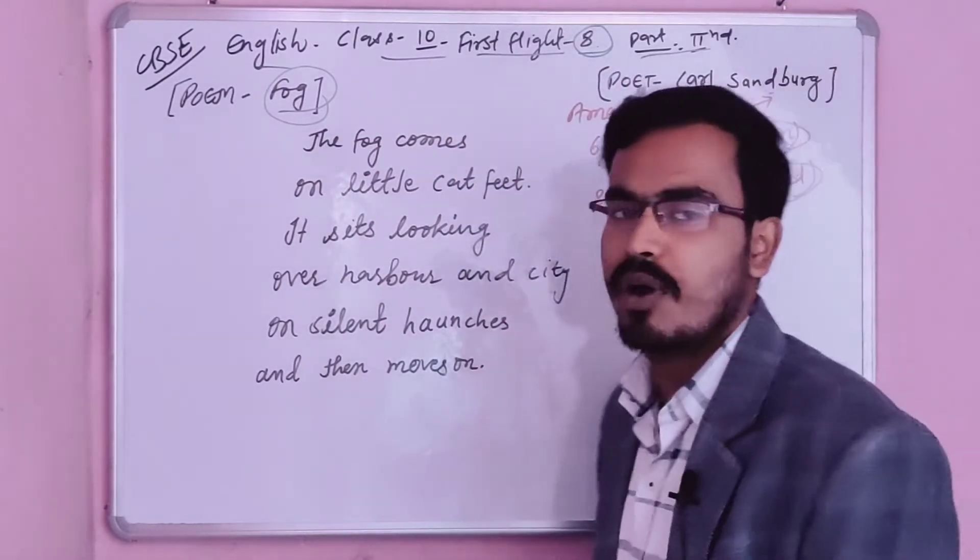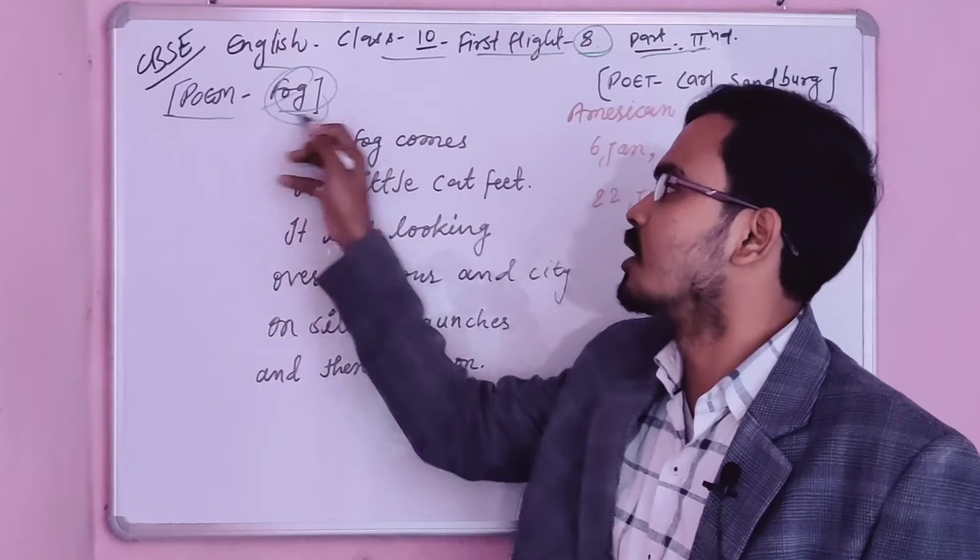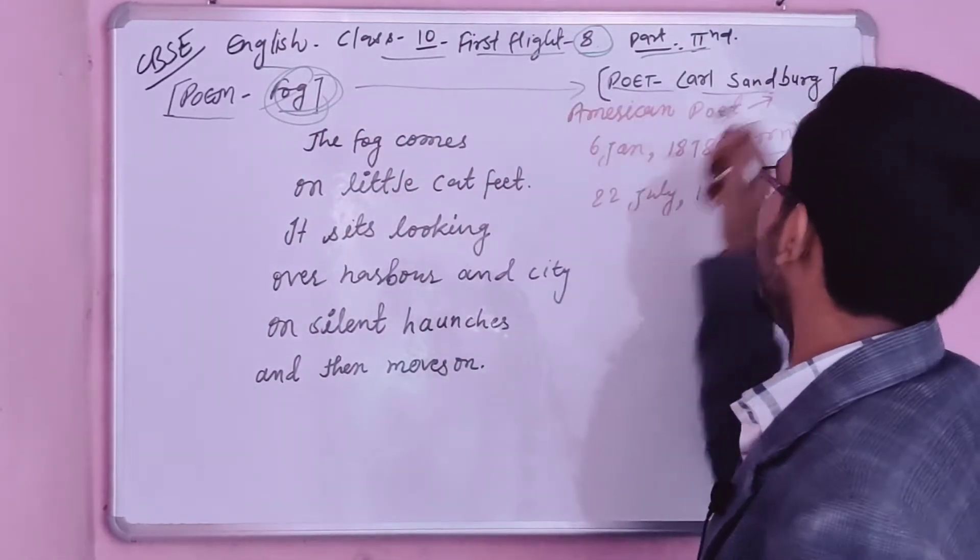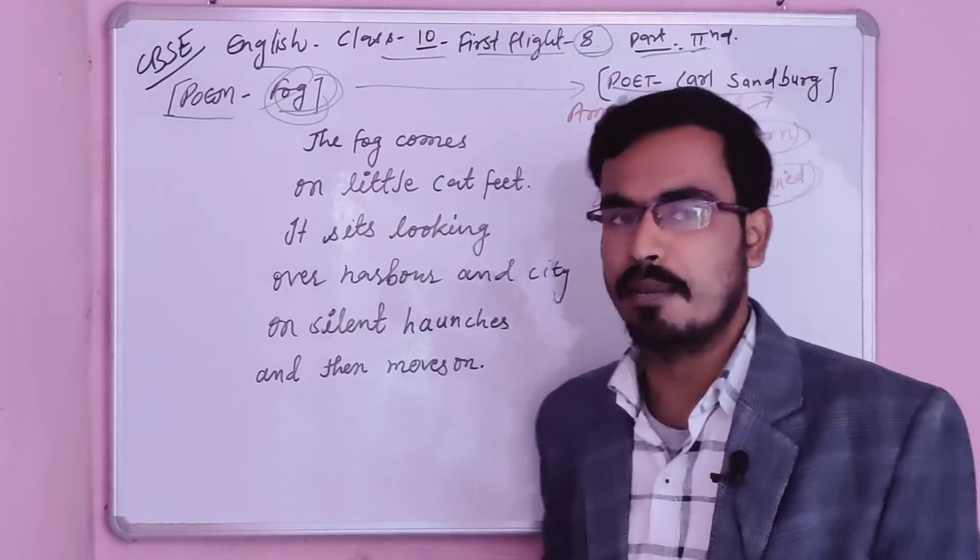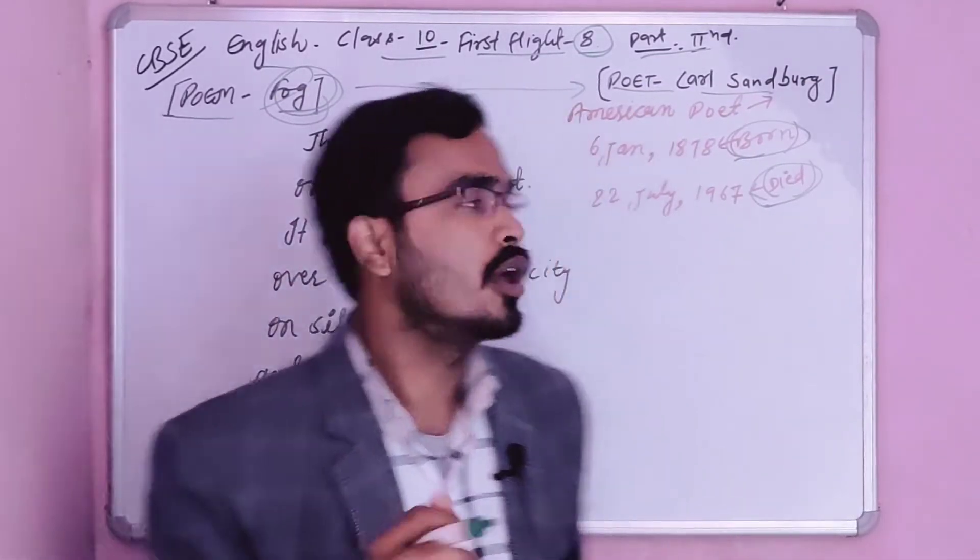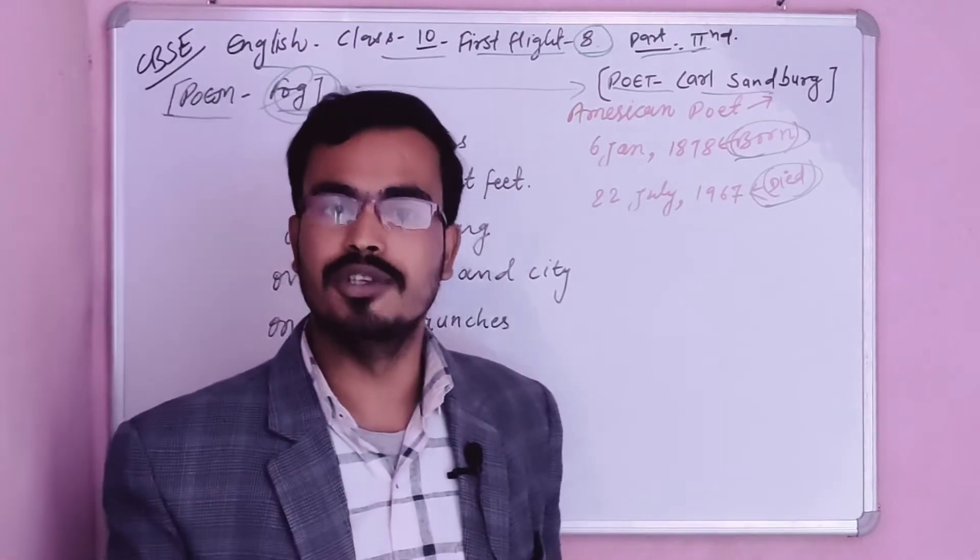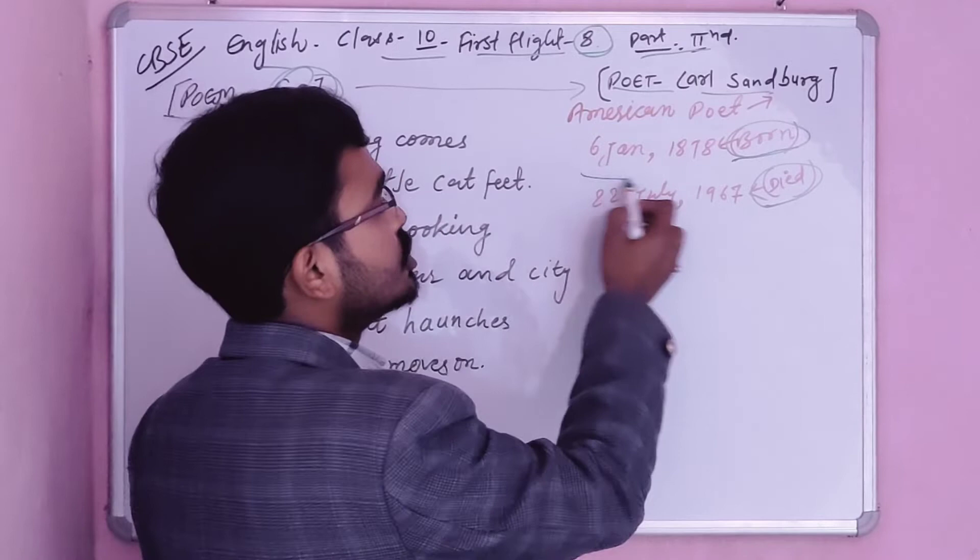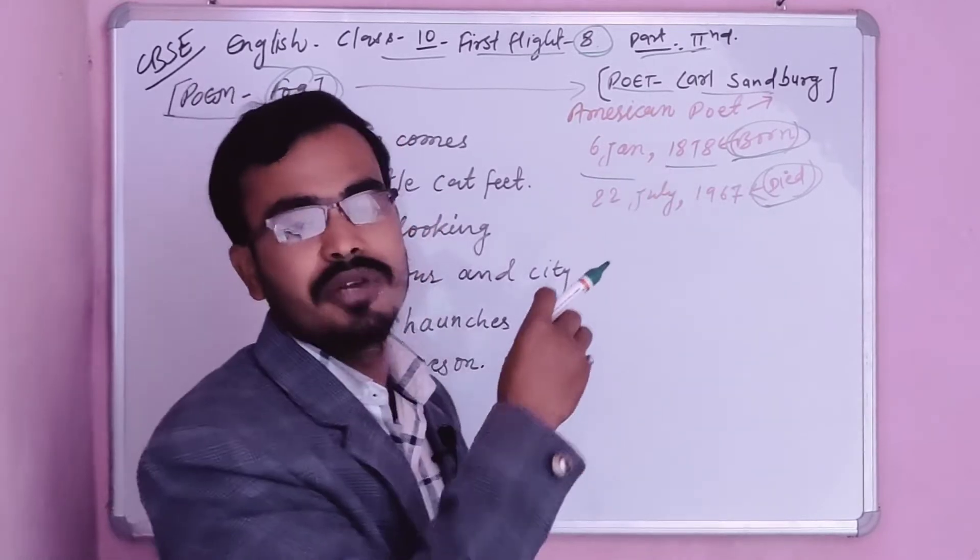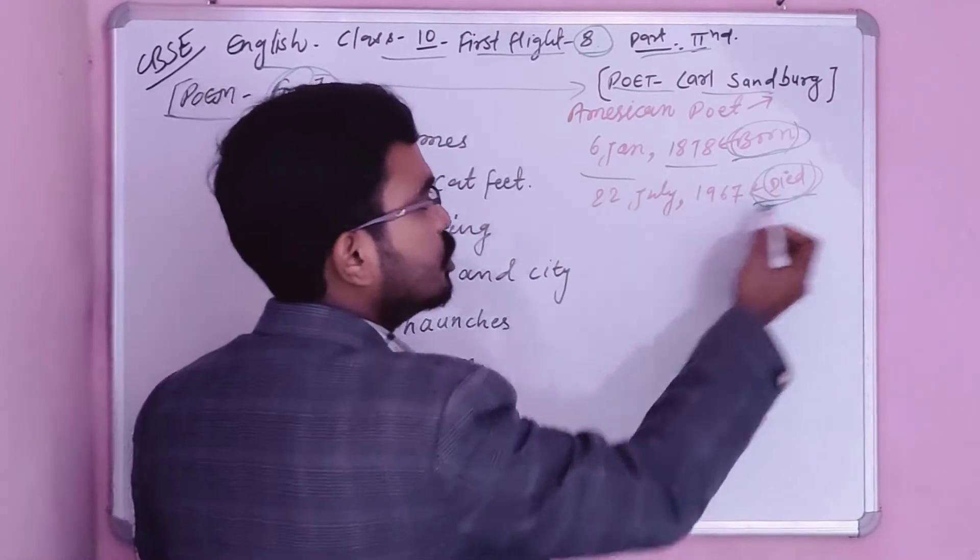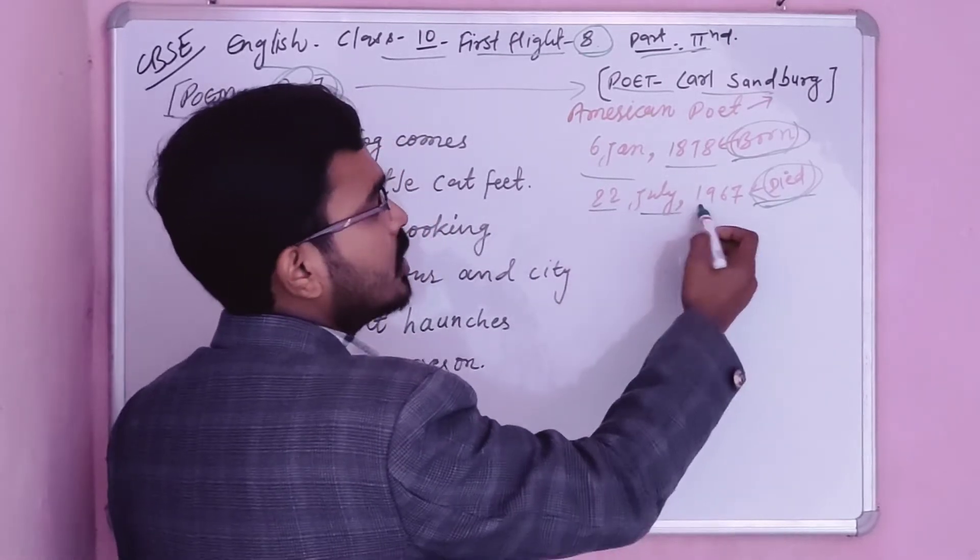The second part is a small poem and its title is Fog. This poem is by Carl Sandburg. Carl Sandburg is an American poet and journalist. He was born in 1878 and died on 22 July 1967.